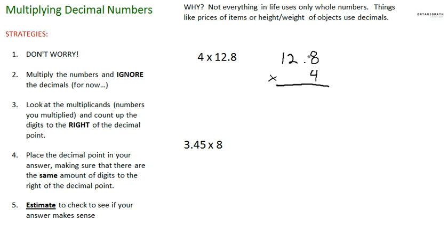I'm just gonna go 8 times 4. Treat this as normal: 8 times 4 which is 32. 4 times 2 which is 8 plus 3 which is 11. 4 times 1 is 4 plus 1 is 5. Now I know the answer is not 512 if you're only doing 4 times 12.8.